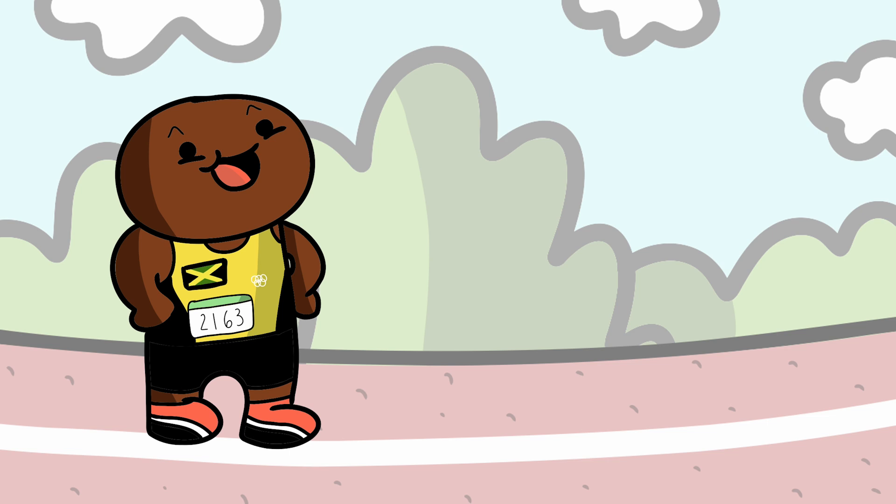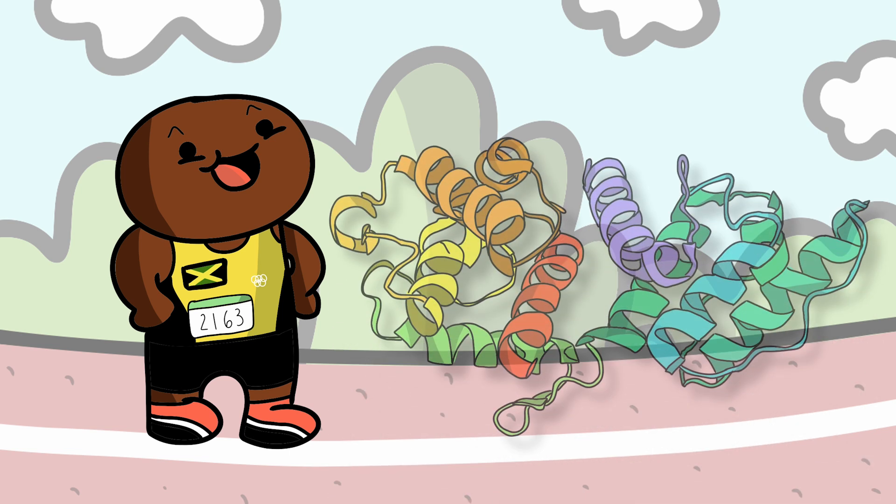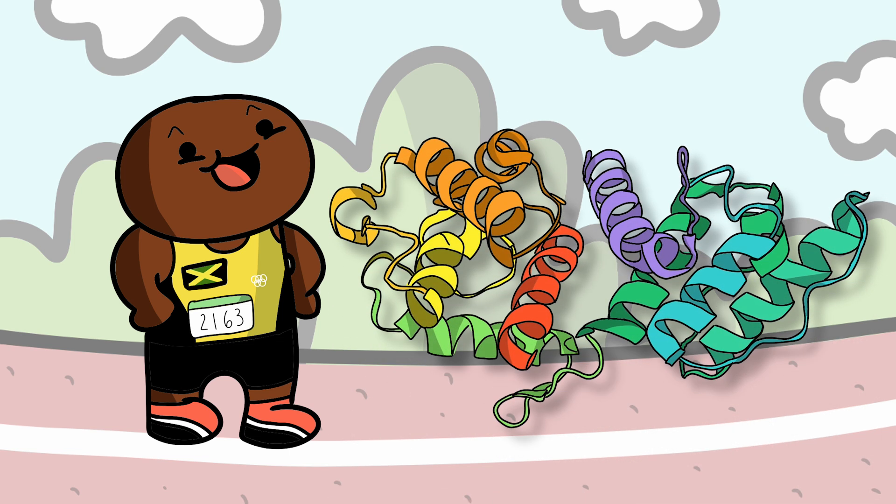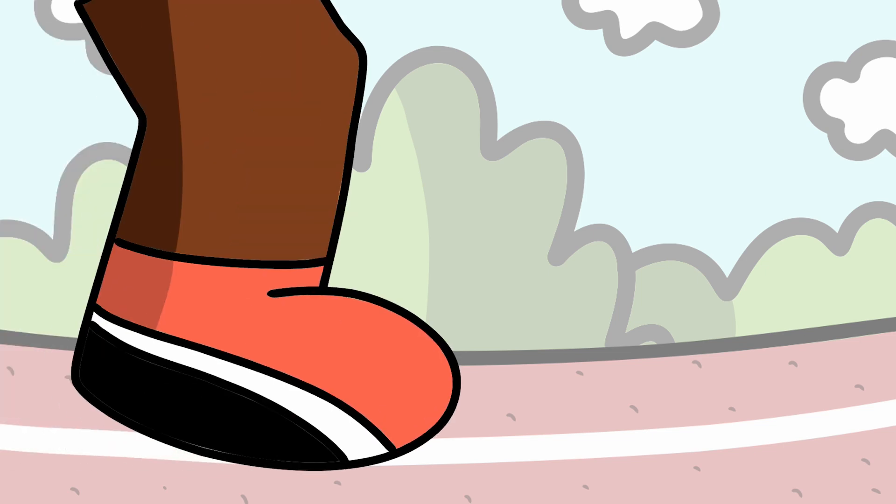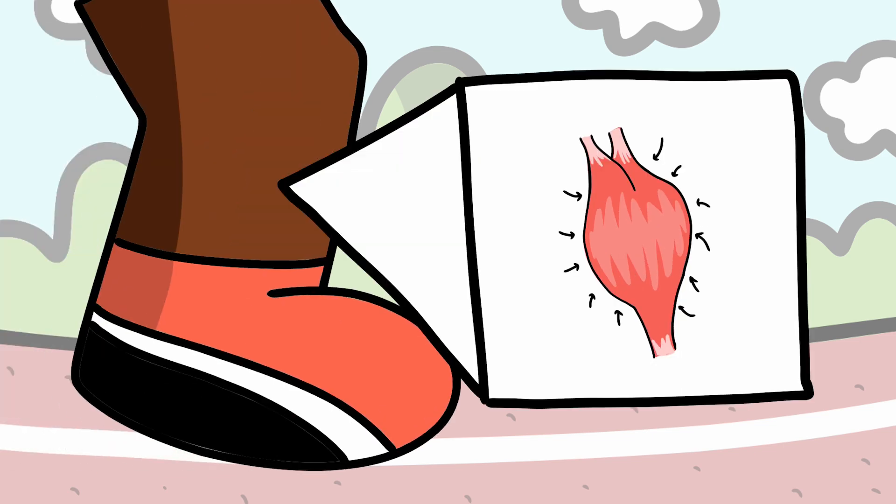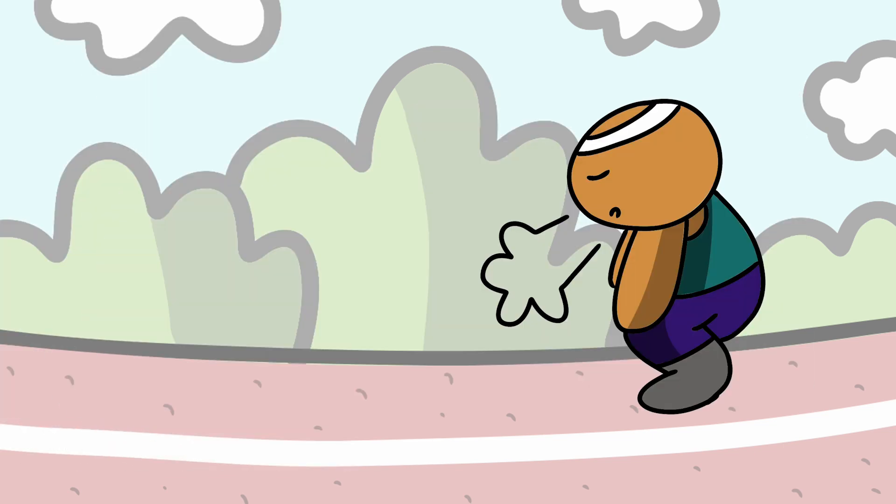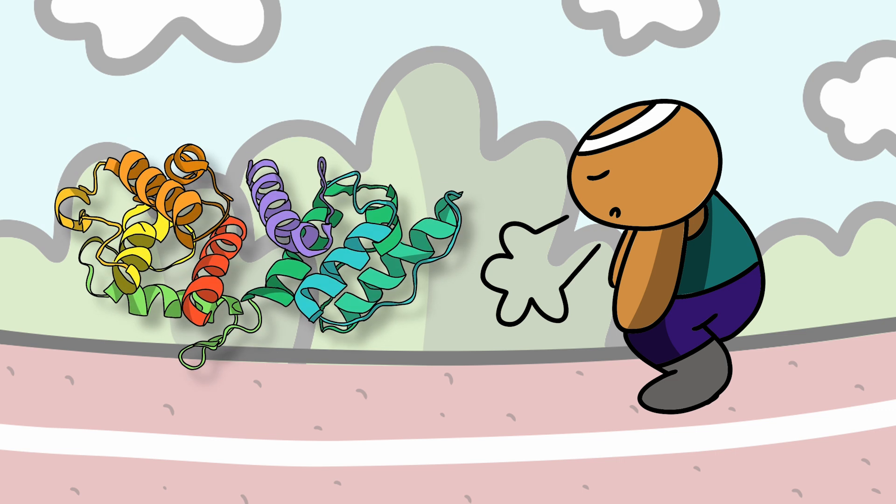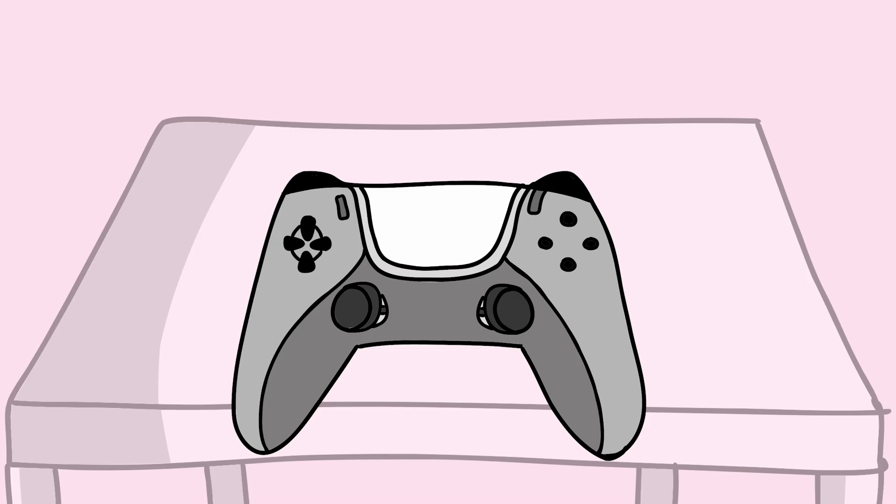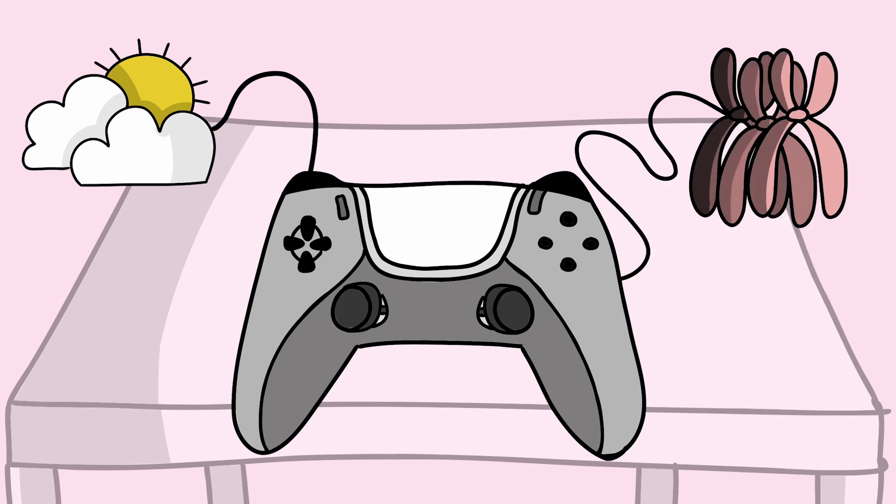For example, Usain Bolt, a globally revered icon, was recently found to have a unique variant of alpha-actinin-3, which enables him to perform incredible sprints due to increased actinin levels in his muscles, but other versions of the same gene predispose athletes to poor performance in endurance and speed-based activities. Such examples paint the picture that our environment and our genetic hardwiring has some unique interplay, ultimately affecting our abilities.